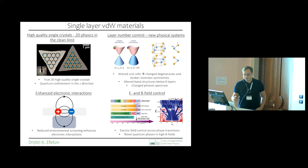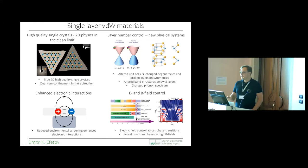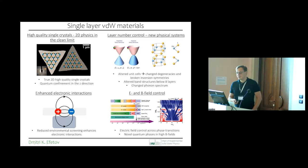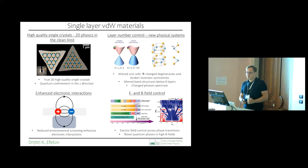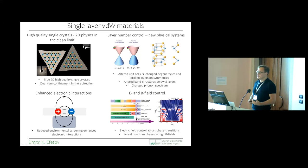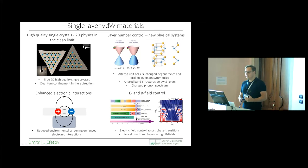Quantum confinement in the z-direction renormalizes the condensed matter effects you can observe. Layer control is really important: different thicknesses — whether you have one, two, or three layers — give a distinct band structure and are basically distinct condensed matter systems by themselves. Very often these materials also have different symmetries. For example, two layers of MoS₂ have inversion symmetry whereas one layer does not, which can change properties quite dramatically — single layer MoS₂ is a direct band gap semiconductor, whereas many multilayers don't have a direct band gap.